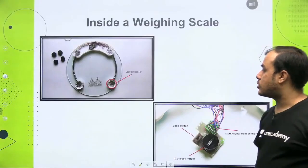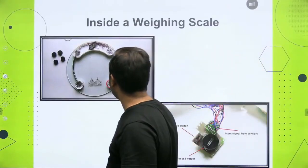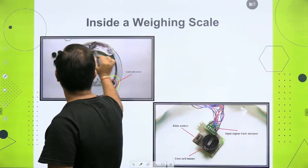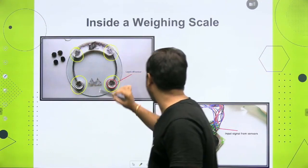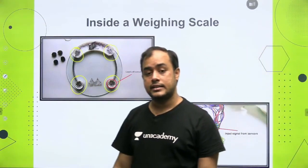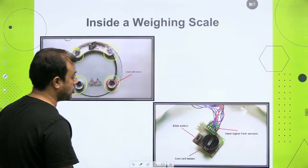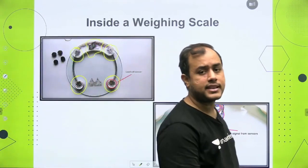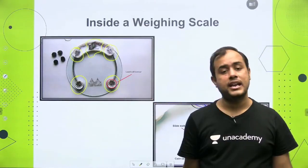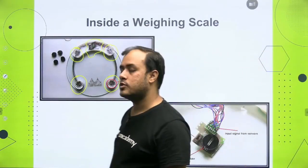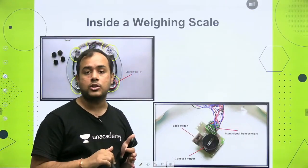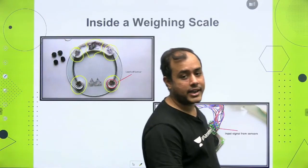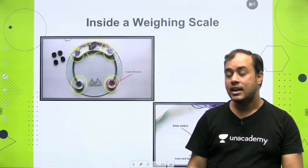If you look inside the weighing scale, you can see load cell sensors fitted on both sides — here and here. When you place both feet on it, these load cells generate voltage, and through the circuit with the microcontroller in the middle, this goes to the digital display. So in this way, load cells and the microcontroller are used to measure weight.